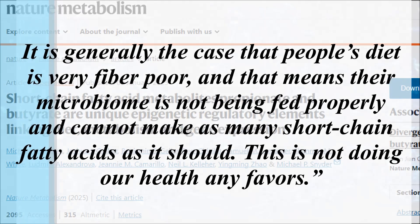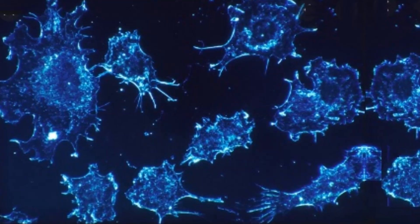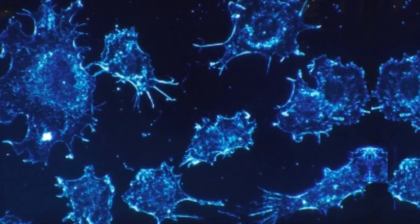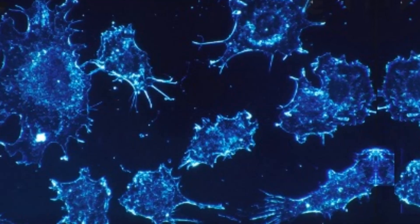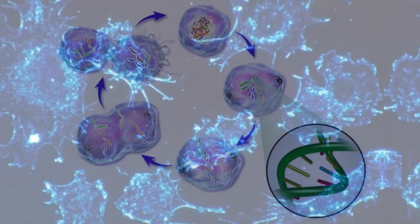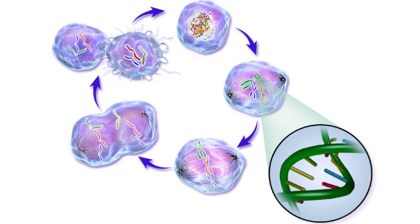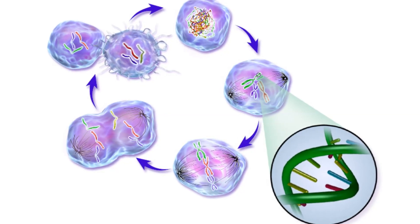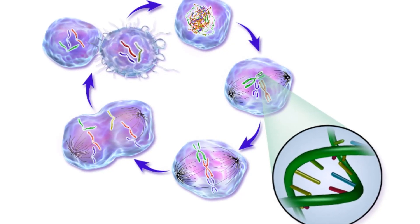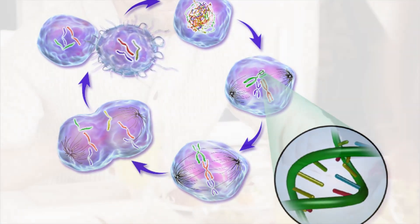But here's where it gets even more amazing. They found that there were differences in how those modifications affected healthy versus cancerous cells. For example, in normal colon cells the fatty acids helped maintain healthy gene expression patterns, but in colorectal cancer cells they disrupted the abnormal gene activation patterns that help cancer cells thrive.